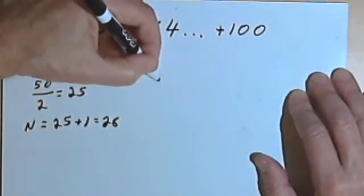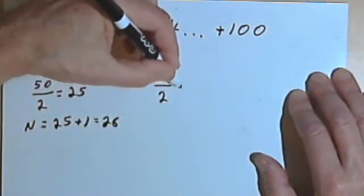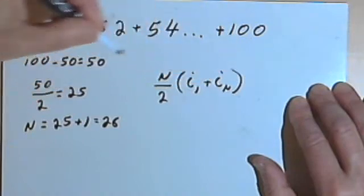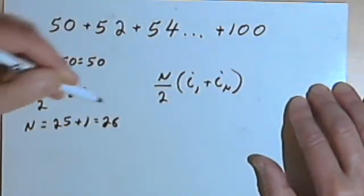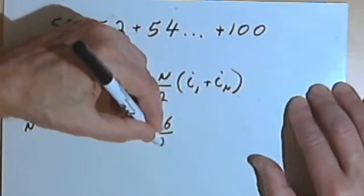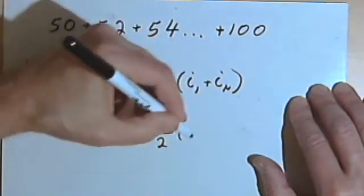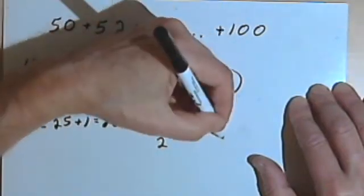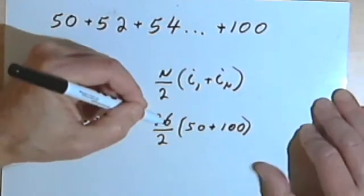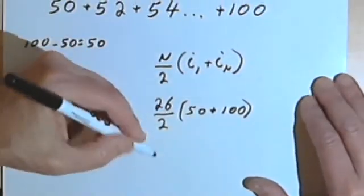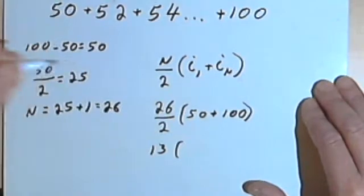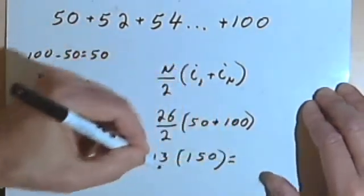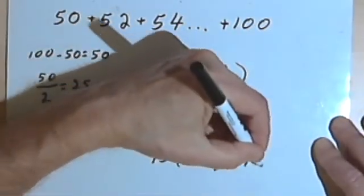Okay, so my formula was n over 2 times i sub 1 plus i sub n. n is 26, so that's 26 over 2 times i sub 1 is 50, and i sub n is 100. So let's see. 26 over 2 is 13, and 50 plus 100, well of course that's 150. And if you multiply 13 times 150, you'll get 1950.